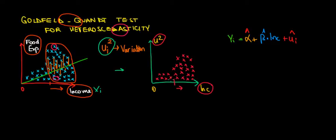Let's have a look at how we actually gonna derive the test for heteroscedasticity now. Recall that this is where we stopped. We are looking for the relationship between the variation of the error term and the independent variable in our regression model.